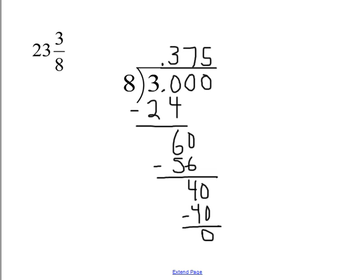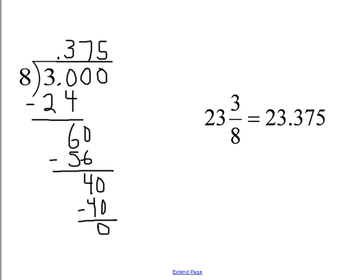3 eighths changed into a decimal is 0.375, or 375 thousandths. Therefore, 23 and 3 eighths is equal to 23 and 375 thousandths.